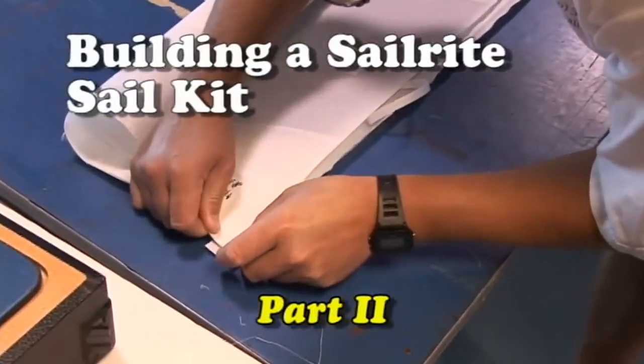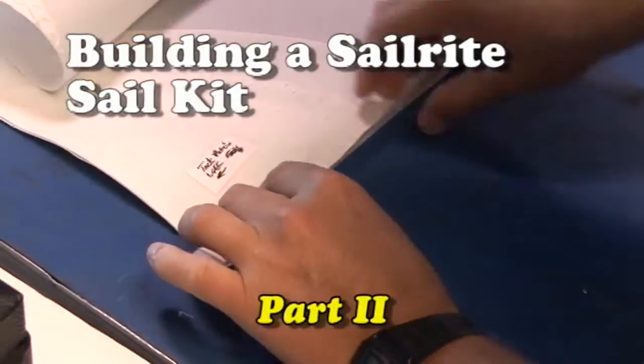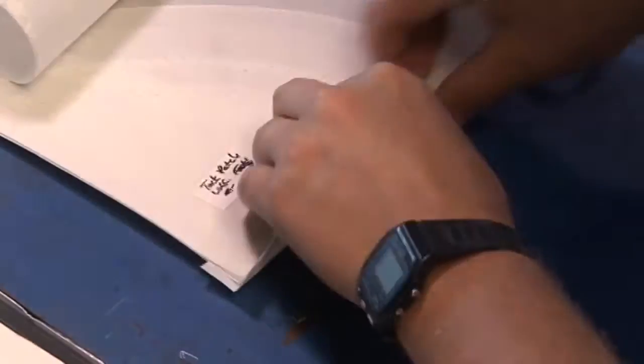This is part 2. We have now assembled and sewn all the panels and all the patches. We'll now concentrate on the edge of the sail and apply the tapes and the hems.